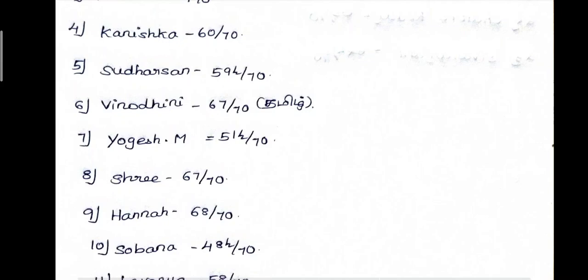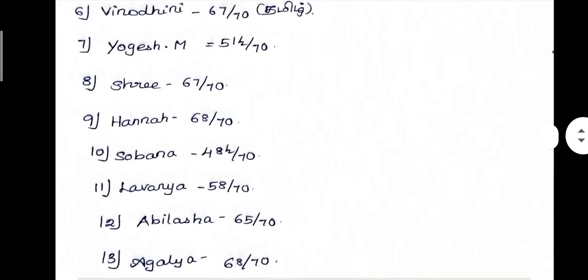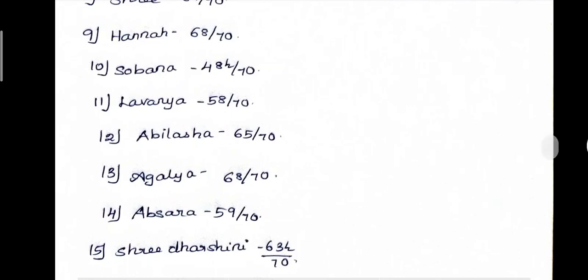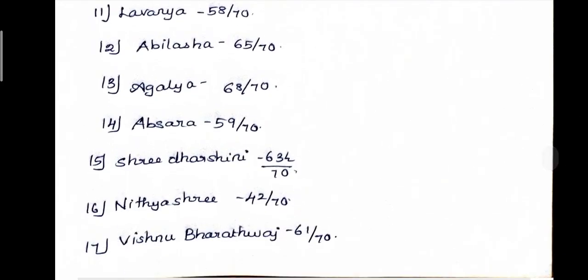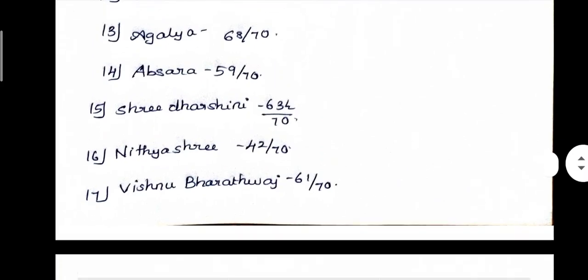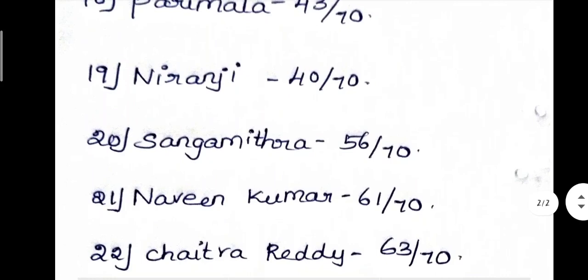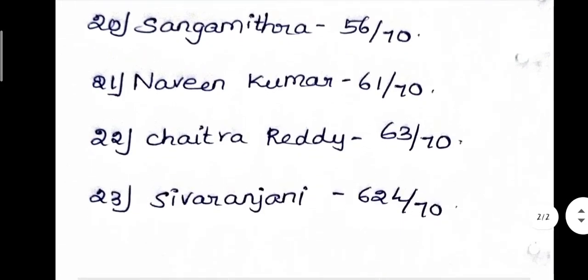Let's check the scores. Yogi: 51.5 out of 70. Sri: 67 out of 70. Hannah: 68. Swobana: 48.5. Lavanya: 58. Abhidashar: 65. Agalya: 68. Abhzara: 59. Sri Darshini: 63.5. Nithya Sri: 42. Vishnubharath Raj: 61. Parimala: 43. Niranjani: 40. Sangamitra: 56. Naveenkumar: 61. Saitra Retty: 63.